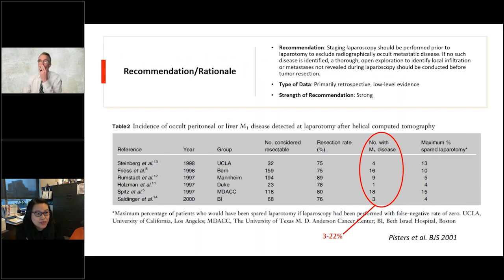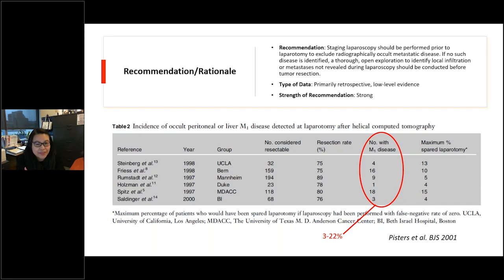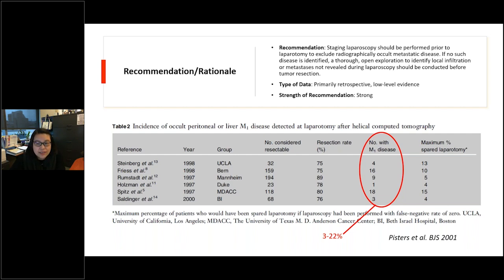Thank you. My charge was to discuss staging laparoscopy as it relates to pancreatic duodenectomy. This has been identified as a technical standard. It's recommended that staging laparoscopy be performed prior to laparotomy to evaluate for the presence of radiographically occult metastatic disease, allowing direct inspection of peritoneal surfaces and the liver, especially for lesions less than five millimeters in size.